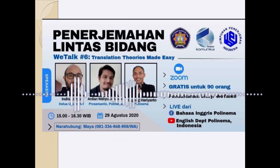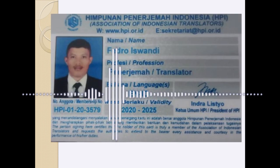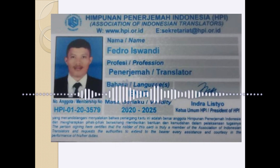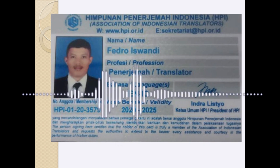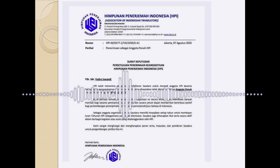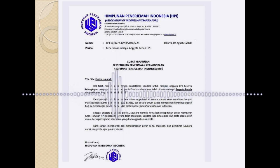If you officially become a member of HPI, you will get a membership card. This is an example of the card — Himpunan Penerjemah Indonesia, Association of Indonesian Translators, www.hpi.or.id. The membership is valid for five years and costs 400,000 rupiah — very affordable — and you receive a certificate. That is the overall information about translation. Let me know if you have questions. Thank you for listening!